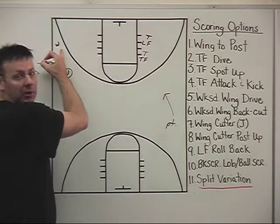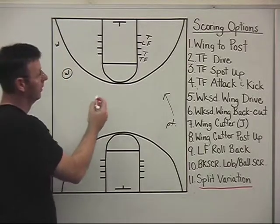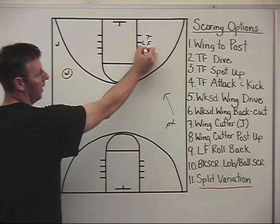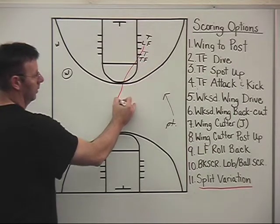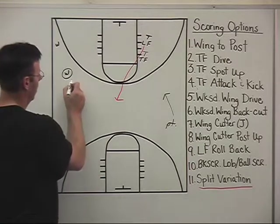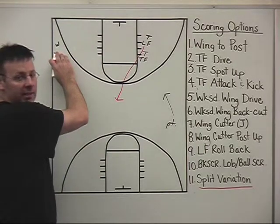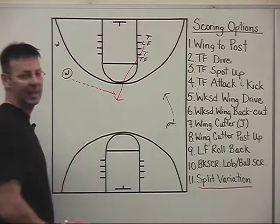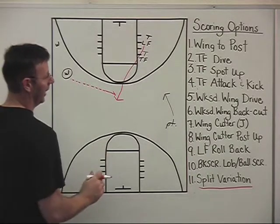Our wing player has come through off of that stagger, and here's where we get the split action. We take our low forward after the screen and we roll that forward straight up to the top of the circle. If we aren't able to get the action of this wing off that staggered screen, we want to throw it in a timely fashion to the top to our lead forward. And that's when we get the split.